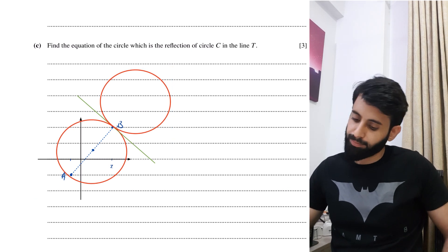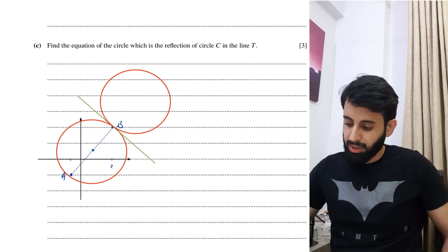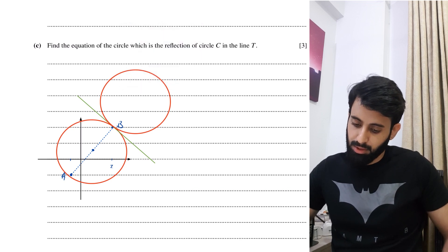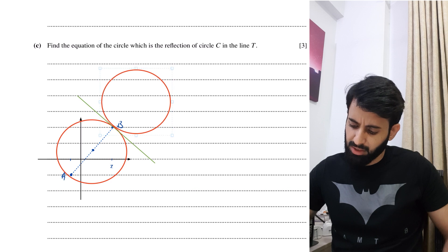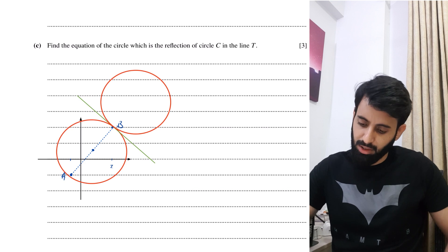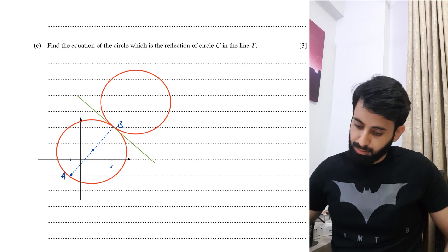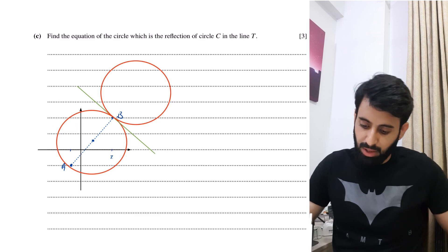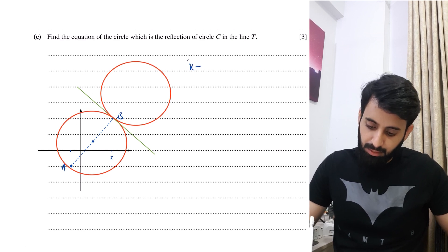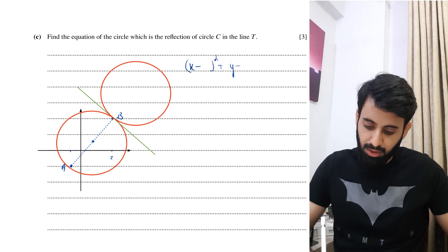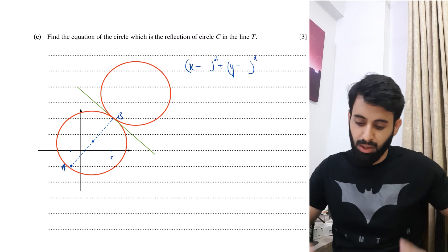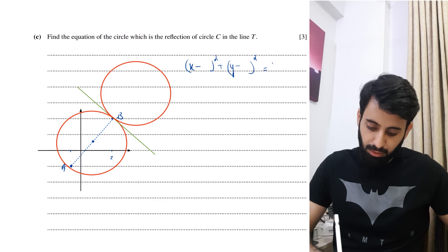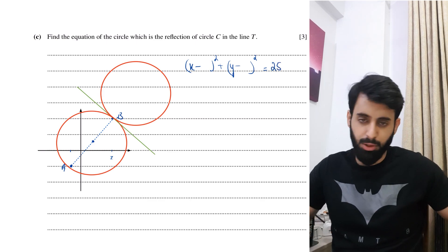When we reflect an object, it's isometric — the size and shape don't change, only the position. Since it's a circle, the radius remains the same at 5, so r squared is still 25. The only thing that changes is the center, so we just need to find the new center coordinates.